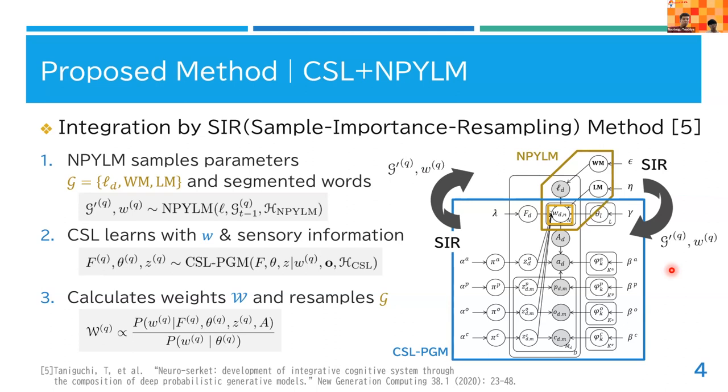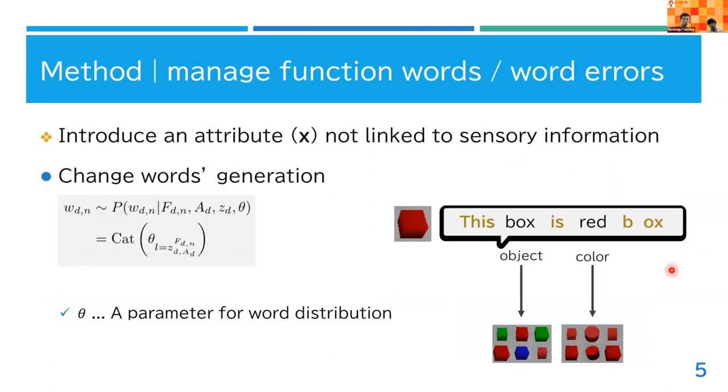Moreover, my proposed method considers words not linked to sensory information. This extension allows the model to reduce effects on learning word meanings. For example, actual sentences contain functional words like 'this' and 'is', or there are some segmentation errors.